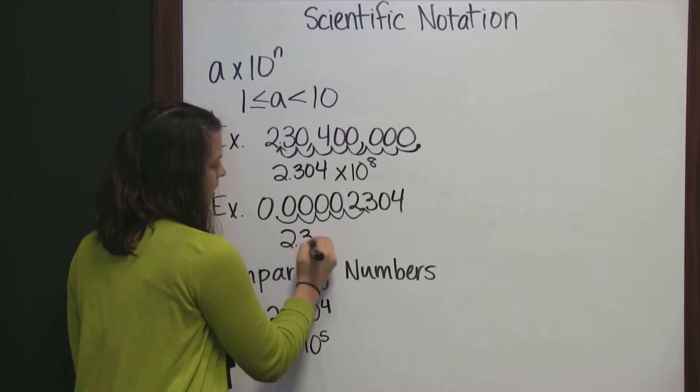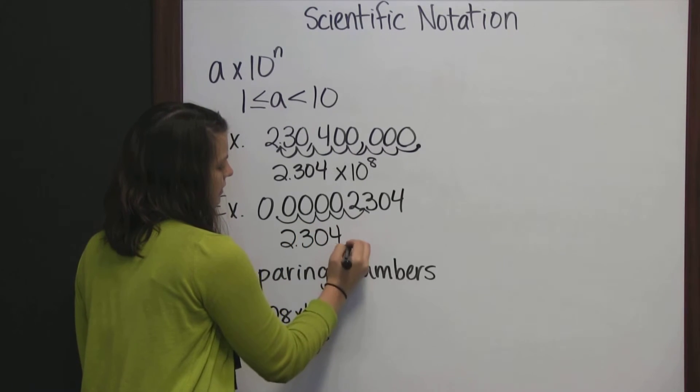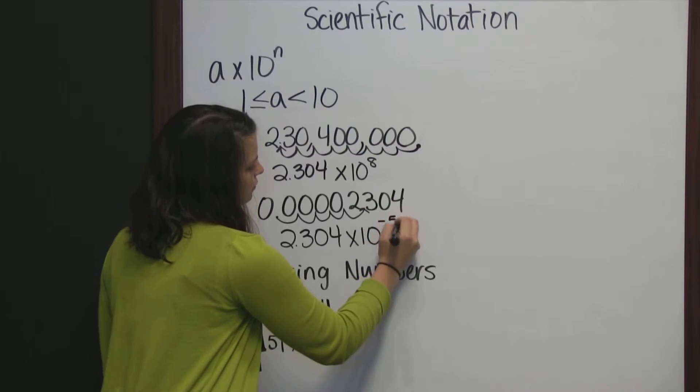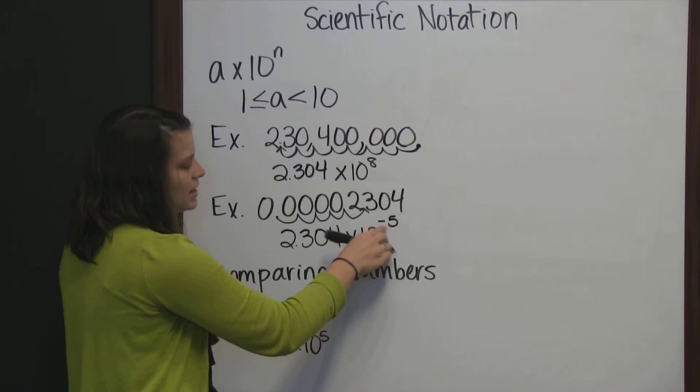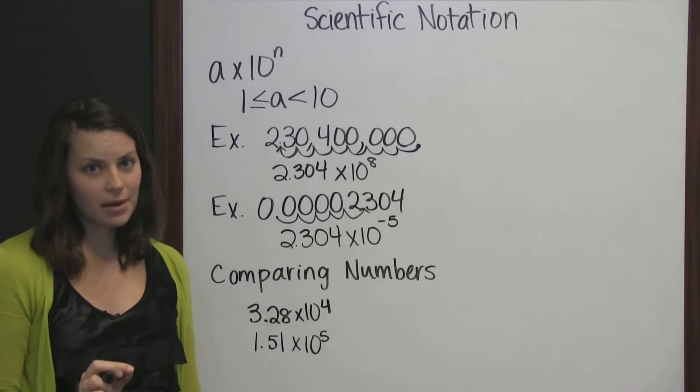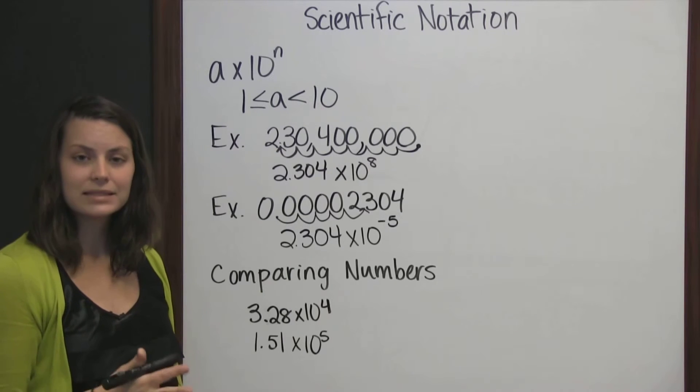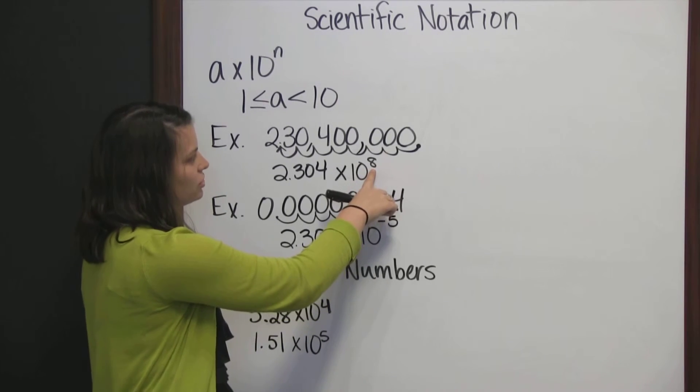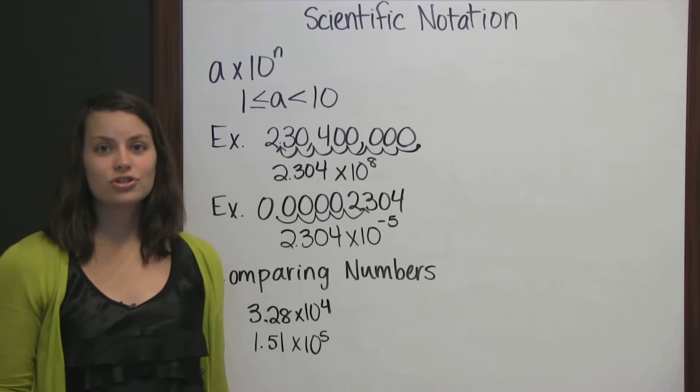So that it becomes 2.304 times 10 to the negative 5. And that negative exponent lets you know that it's a very small number. It's a decimal. It's less than 1. Whereas a positive exponent tells you that it's a very large number.